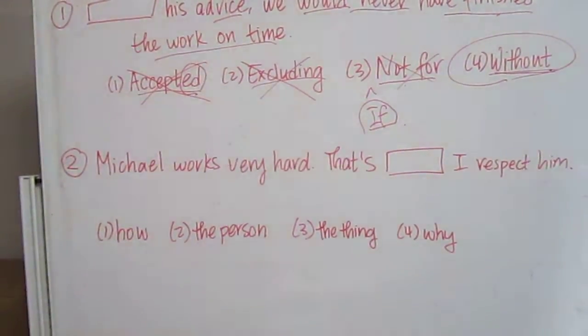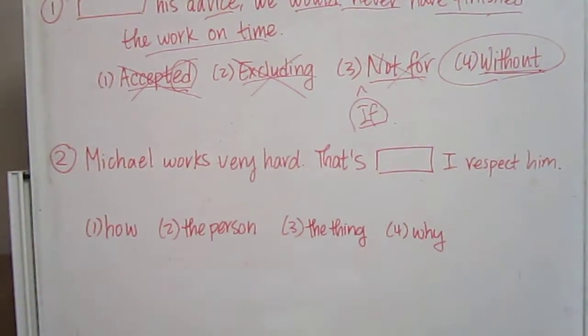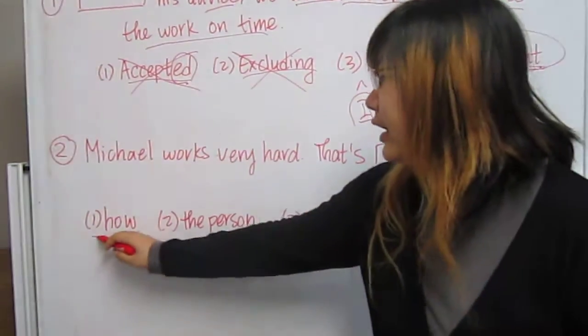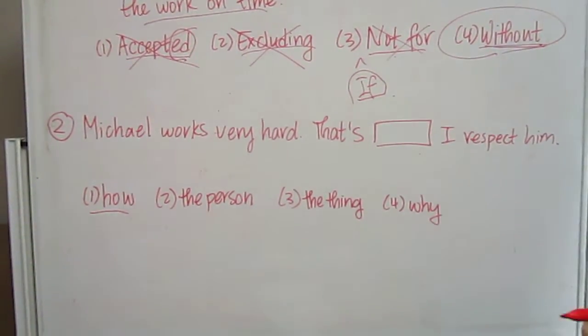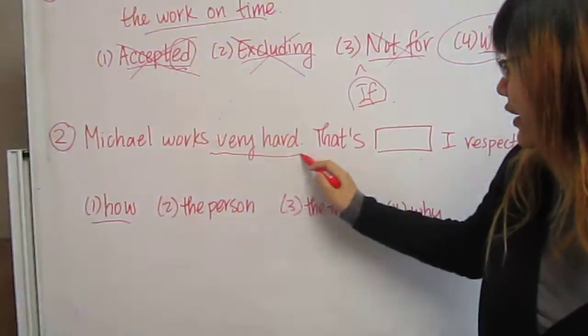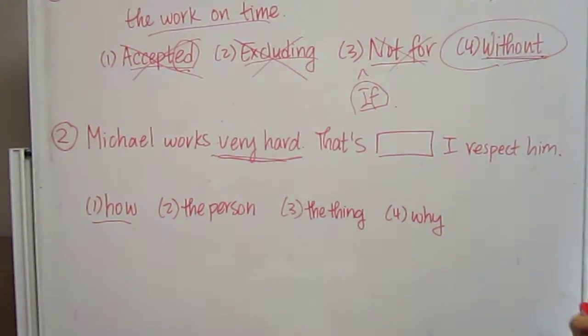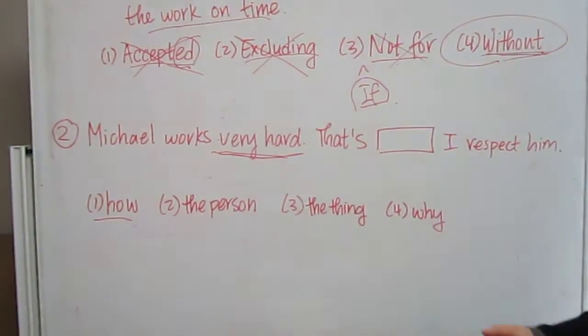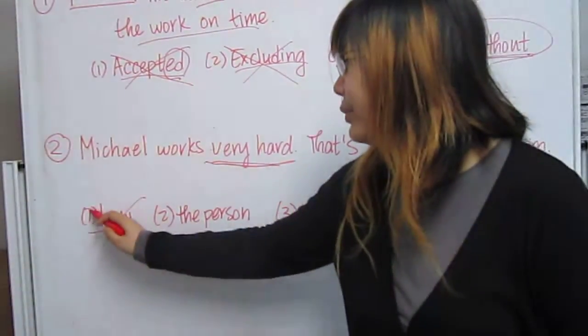Now let's look at the next sentence. Michael works very hard. That's, I respect him. The first word, how. How refers to a method or a process. Michael works very hard. The first word is an aspect of Michael, a characteristic of Michael. It is not a process or a method. So how would not be appropriate to use.